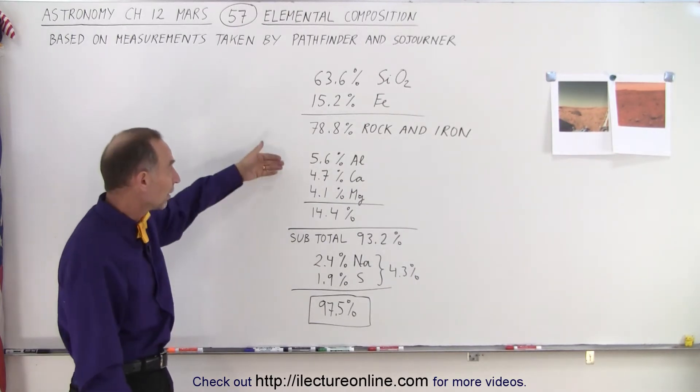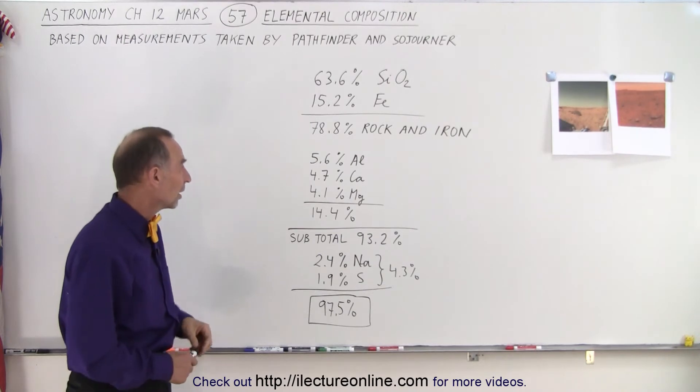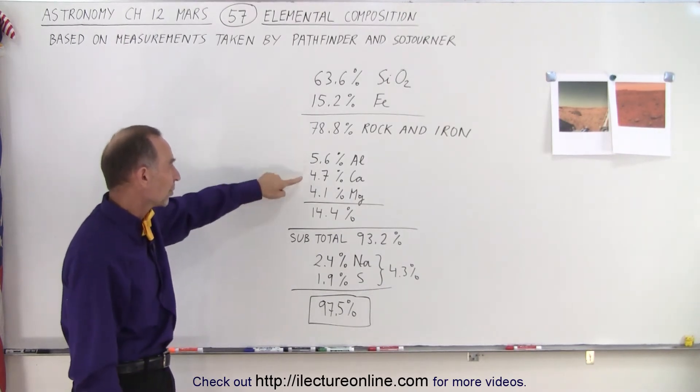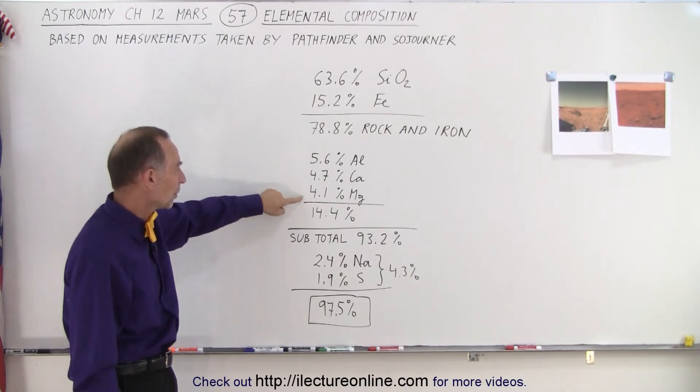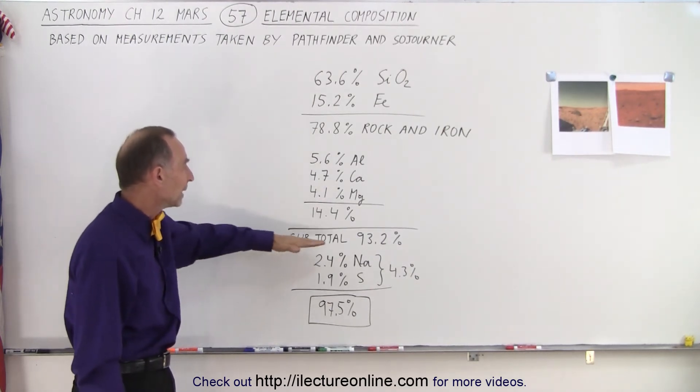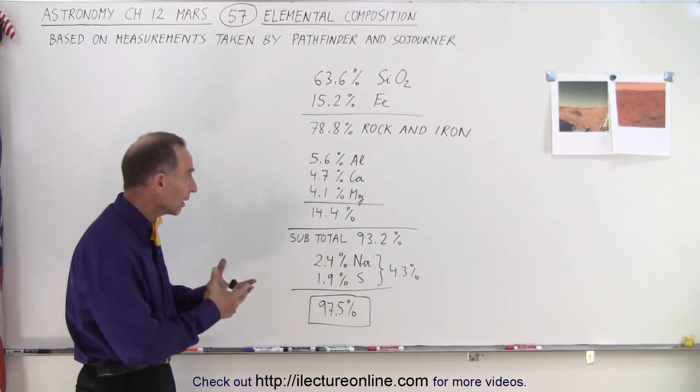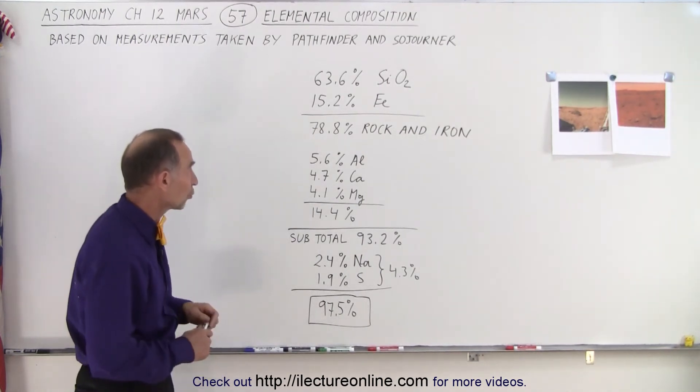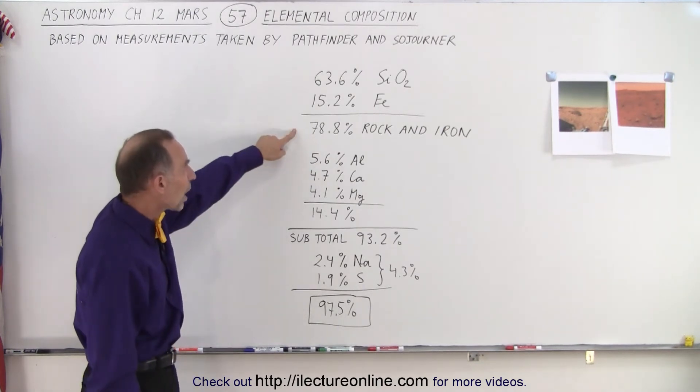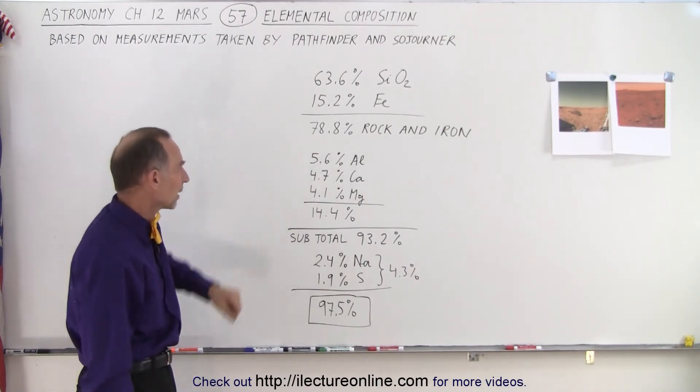Then three more very predominant constituents are aluminum at 5.6%, calcium at 4.7%, and magnesium at 4.1%. When we add all that up, 93% of the soil on Mars, when they analyzed it at the Pathfinder Sojourner landing site, was rock, iron, aluminum, calcium, and magnesium.